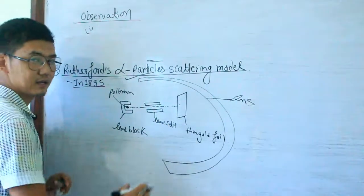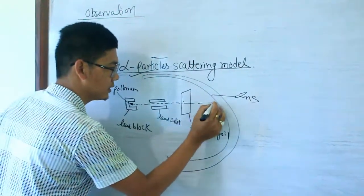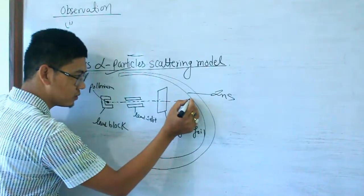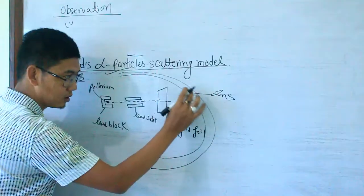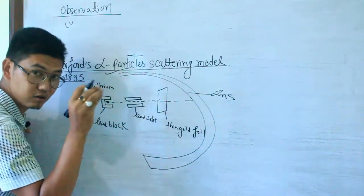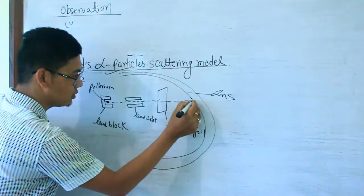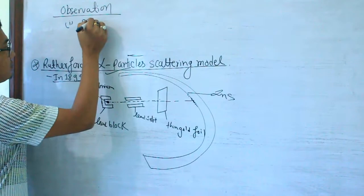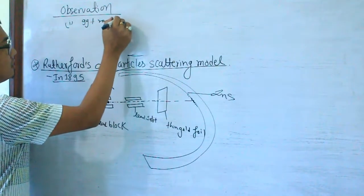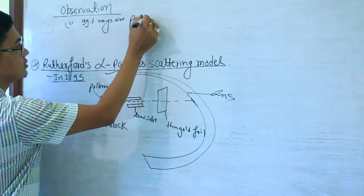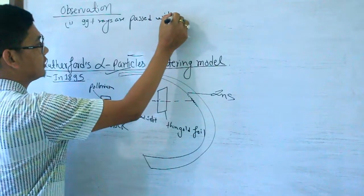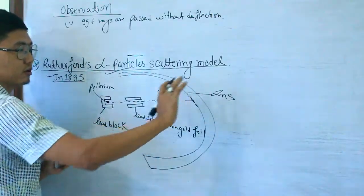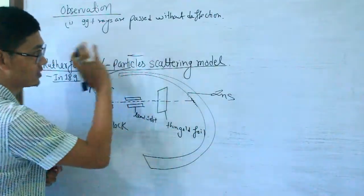The first observation is that most of the alpha particles — 99% — pass through the gold foil without any deflection. These rays pass straight through.